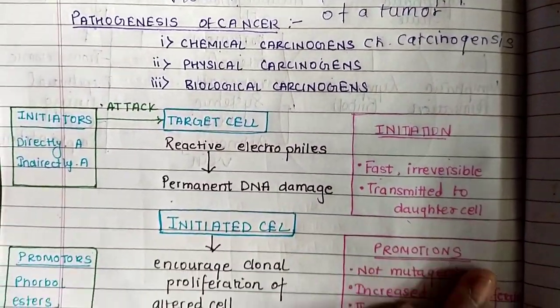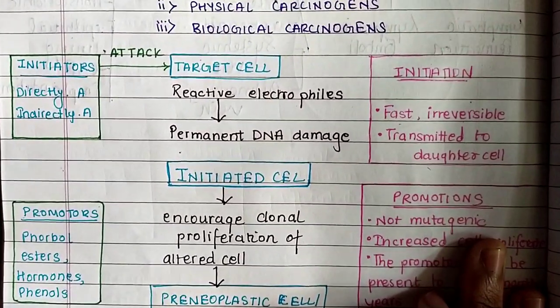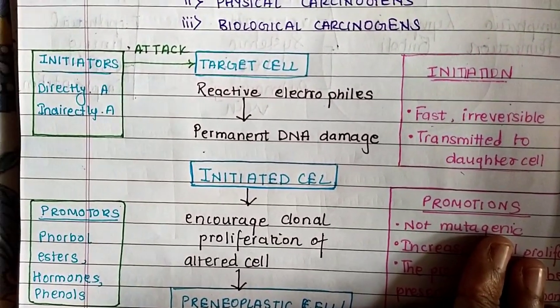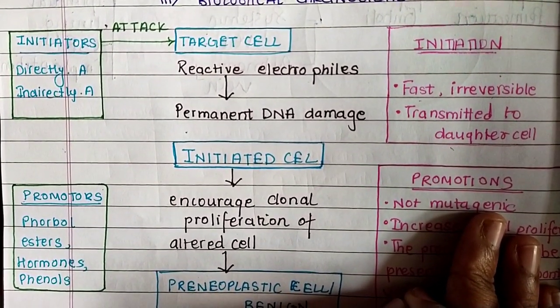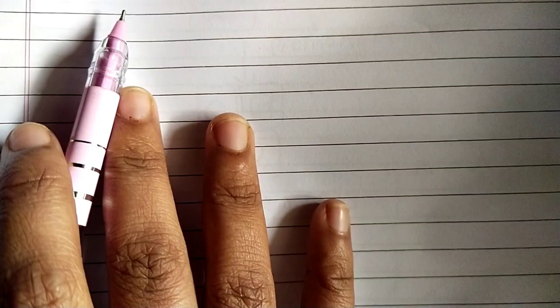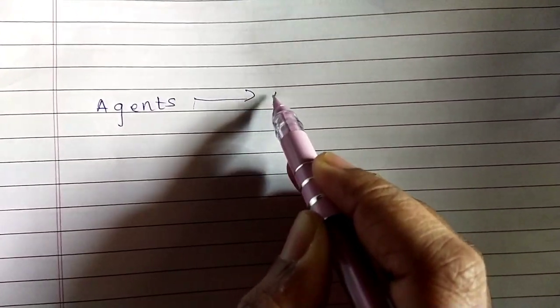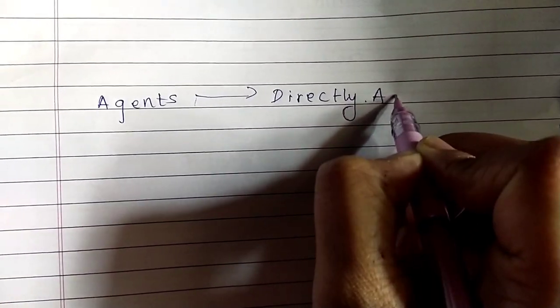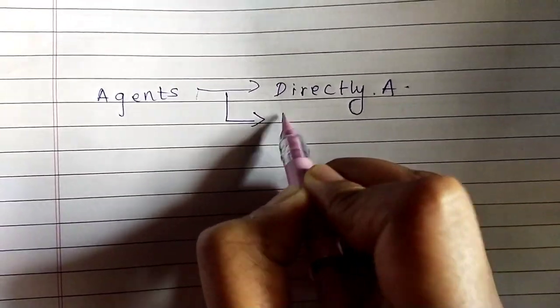We will see the mechanism of exactly what is chemical carcinogenesis. Whenever there is a formation of a tumor, it requires some agents. These agents are either directly acting agents or indirectly acting agents.